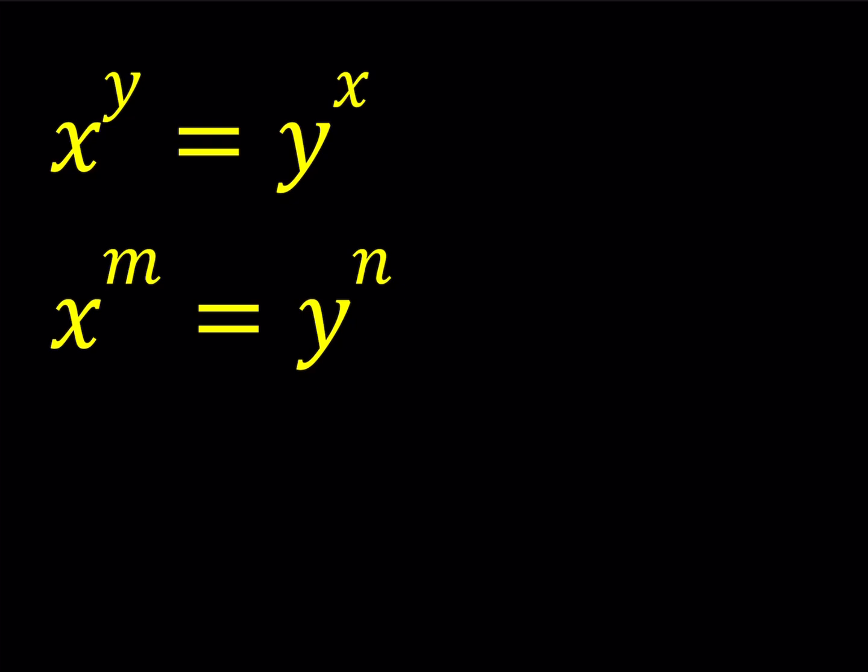We have x to the power y is equal to y to the power x and x to the power m is equal to y to the power n. So there are some restrictions here.